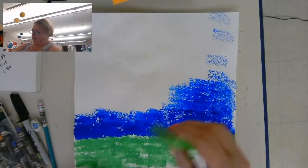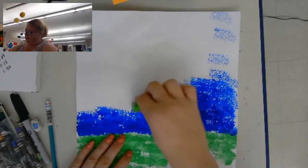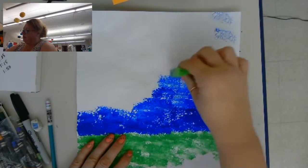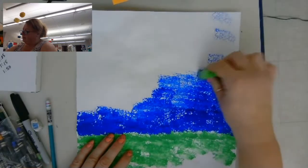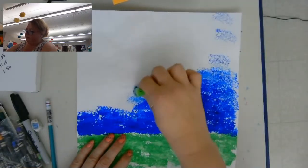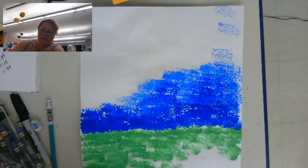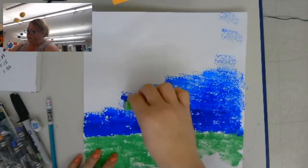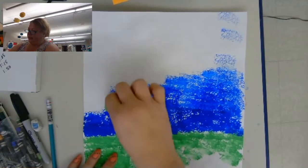So then I'll redip and keep dabbing the paint on until I have the whole top blue and the whole bottom green.